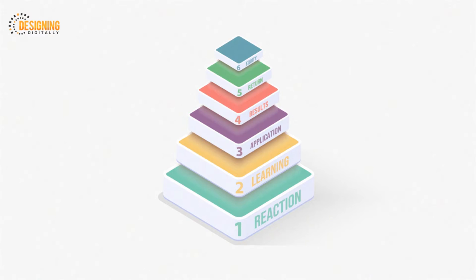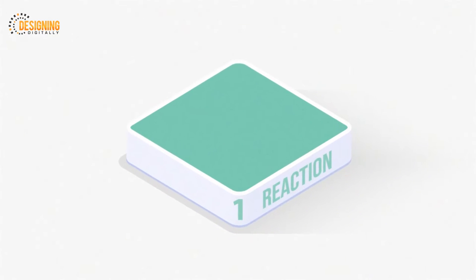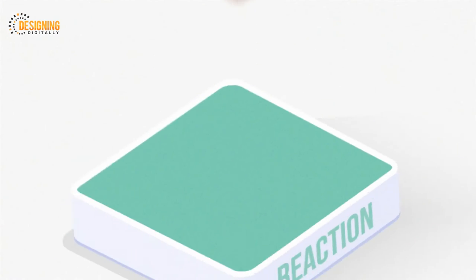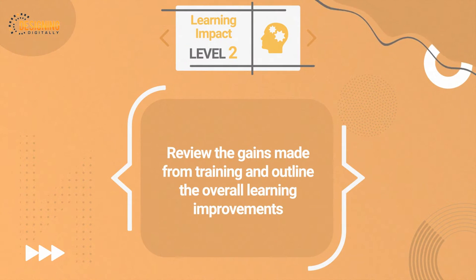Level one: Reaction. Analyze how the audience felt about the training and if employees found the course meaningful to their job roles. Level two: Learning Impact. Review the gains made from the training and outline the overall learning improvements.